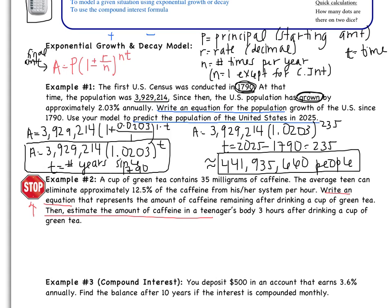Okay, let's see how we did. So our equation should have been A equals. It says a cup of green tea contains 35 milligrams. So that's what it starts out with, 35 milligrams of caffeine. Then I have one. I need to decide, am I adding or subtracting? Well, it says the average teen can eliminate 12.5% of the caffeine. So that indicates that something is decreasing. So I'm going to have one minus. 12.5% as a decimal is 0.125. Move the decimal places to the left. N is one. I told you it's going to stay like that until we get to compound interest, which is the next example.